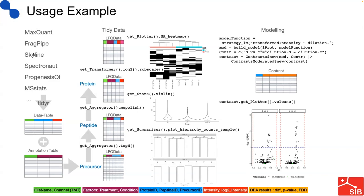A typical usage example is that we start with outputs from a software, for instance from FragPipe. The data is converted into a tidy data table where the annotation is added, containing the explanatory variables which will be used in the modeling. All the data ends up in one large data frame, which the methods in Prolefka know how to handle thanks to the configuration. The data can then be aggregated, for instance from precursor to peptide level and from peptide to protein level. At each stage, diagnostic plots can be generated.